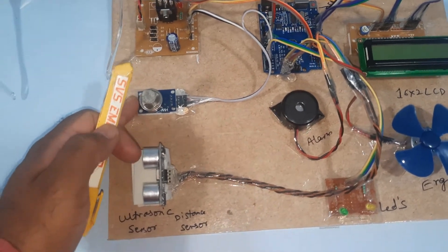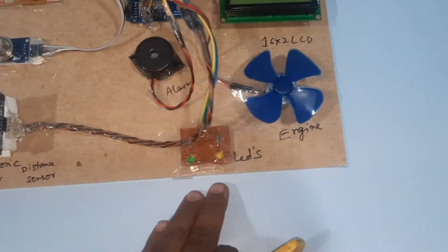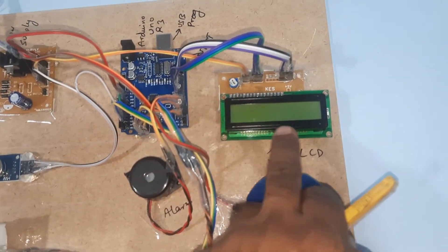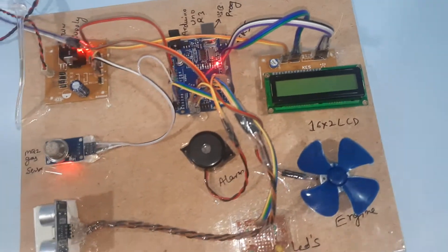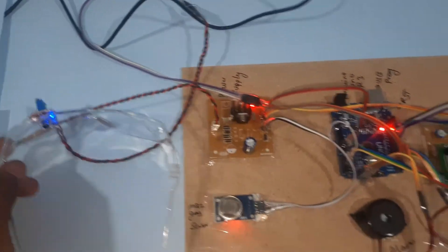Ultrasonic distance measurement module, green LED, orange LED, alarm and engine, 16x2 LCD display, Arduino UNO R3 board, and one eye blink sensor. If we wear it, we can count the 10 eye blinks.